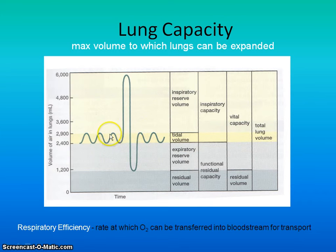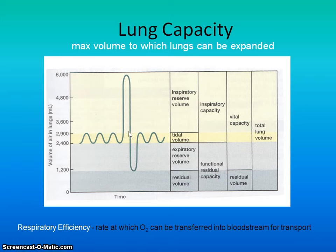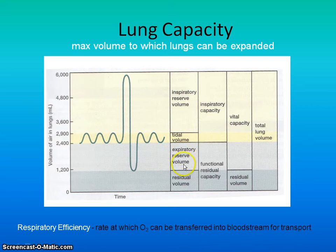From the top of those normal breathing waves to the very top of the graph is your inspiratory reserve volume — how much extra you could breathe in if you needed to, like going underwater or blowing up a balloon. The expiratory reserve volume is the opposite: the maximum amount you can force out after what you've normally breathed out.